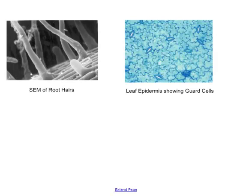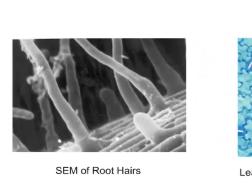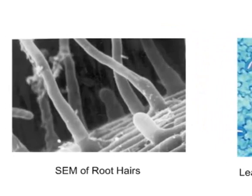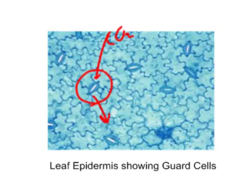We can also look at other types of plant tissues. Here we see a scanning electron microscope image of root hairs, which really shows how we get this incredible surface area. And here we see leaf epidermis, which shows the guard cells that control how CO2 can get into the leaf and how oxygen can get out.